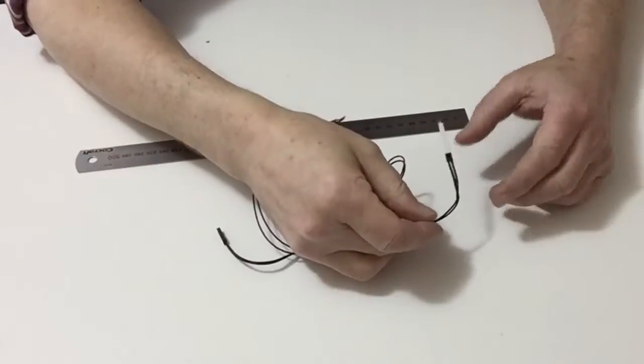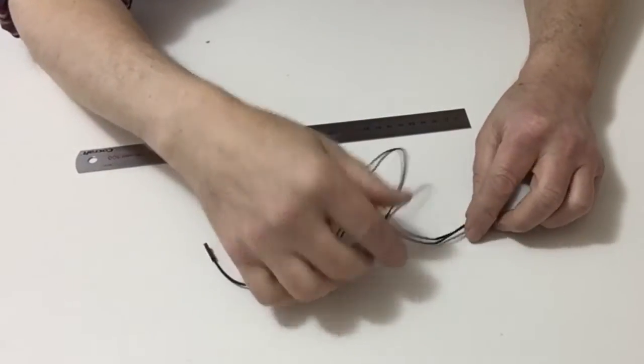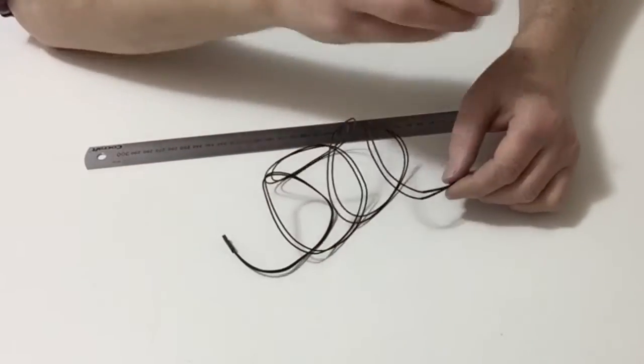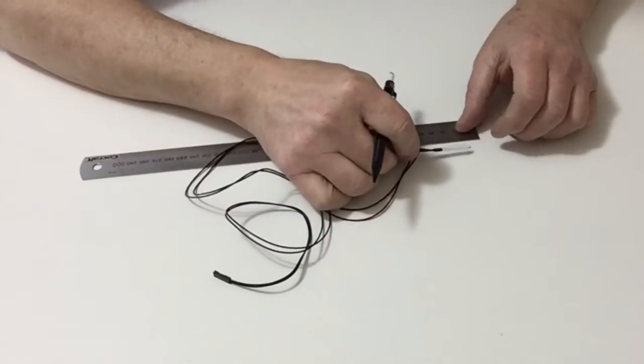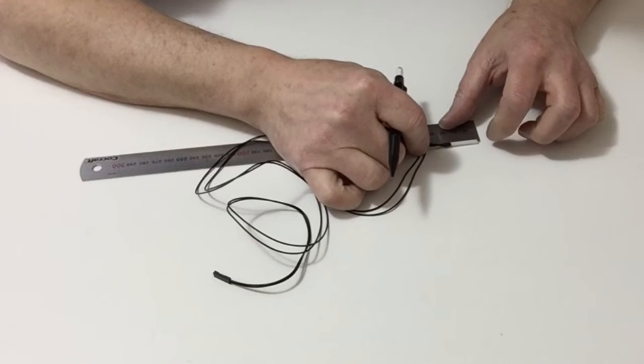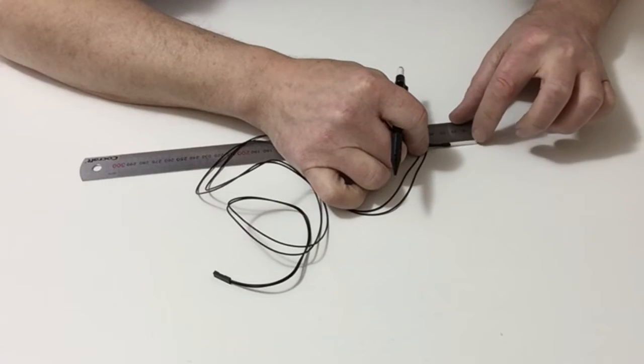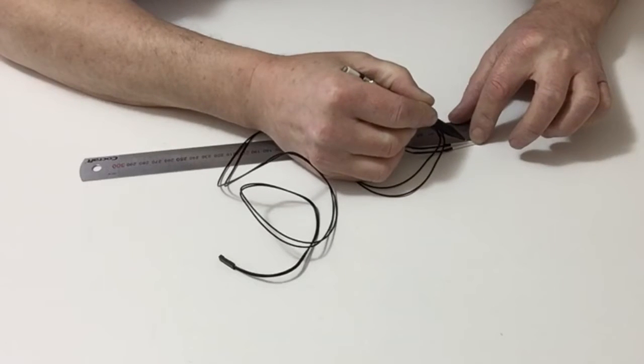Take the thermistor and a steel ruler, then with a marker pin carefully measure 11mm from the tip of the thermistor and gently make a mark at 11mm.